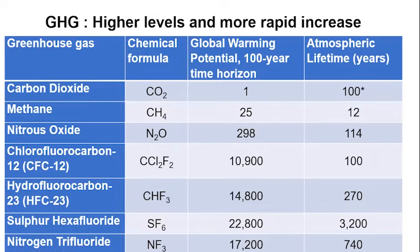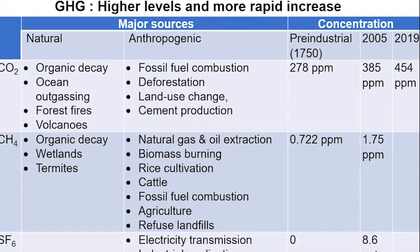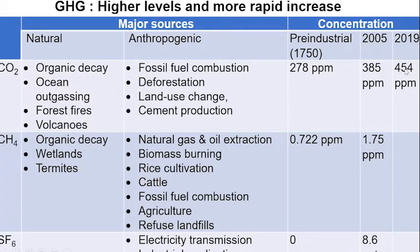It is important to note that in the atmosphere, the pre-industrial concentration was about 278 parts per million. In 2005, it was 385 ppm. In 2019 — three years ago — it was 454 ppm. So you can see that probably by 2030, we will have doubled the concentration of CO2 in the atmosphere, and this is what is worrying.